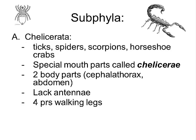There are four subphyla but we're going to look at three. The chelicerates include ticks, spiders, scorpions, and horseshoe crabs. They are named for a specialized mouthpart called the chelicera. They have only two body parts: a fused head and chest called the cephalothorax, and the abdomen. They do not have any antennae, and they have four pairs of walking legs — eight legs total — which is a key characteristic distinguishing them from other subphyla.